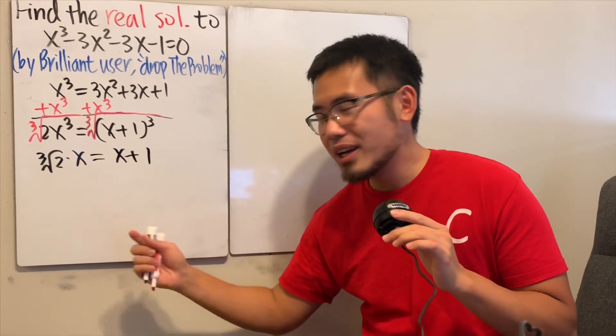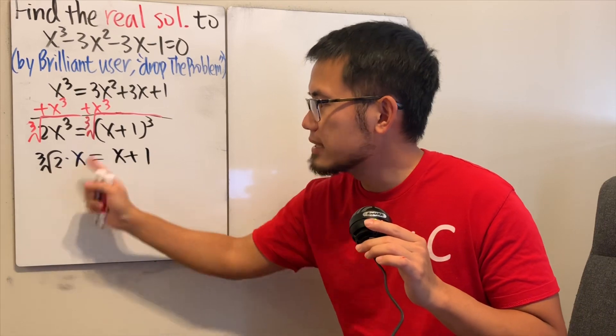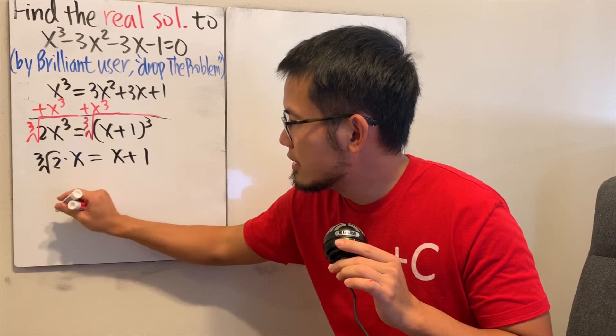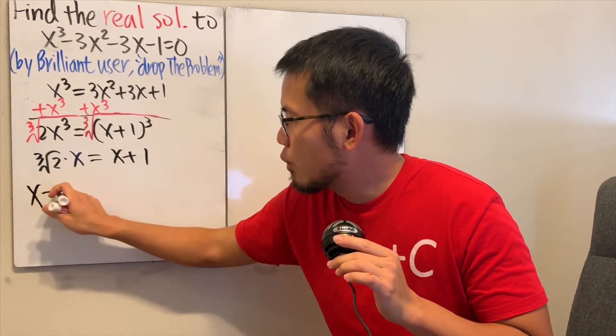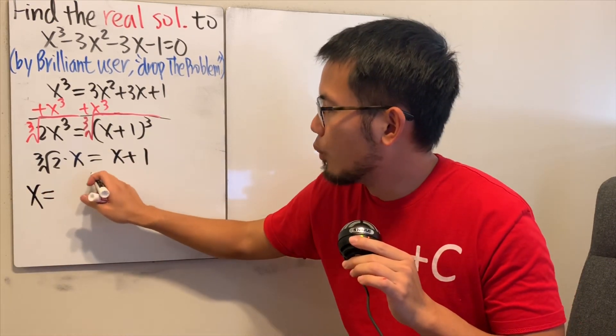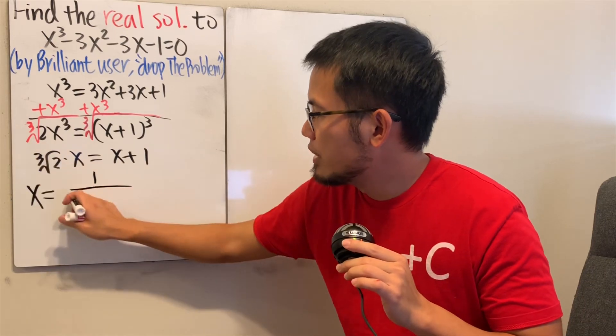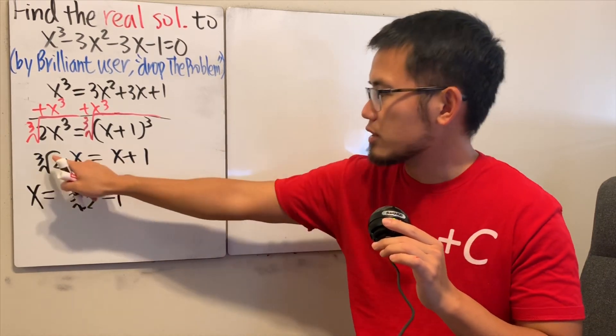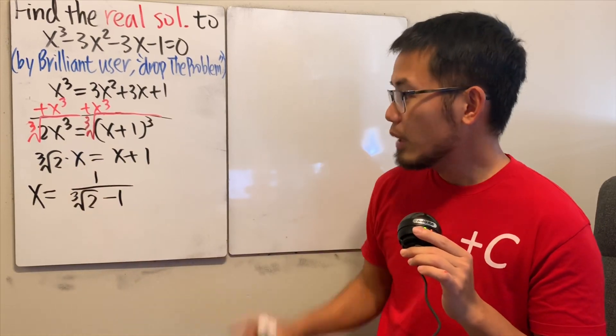And this right here, we can just minus the x on both sides. And then divide ∛2 - 1 on both sides. So you'll see, this is just going to be x = 1/(∛2 - 1). And we are done.